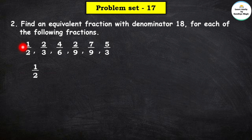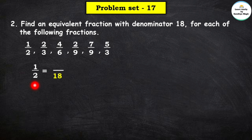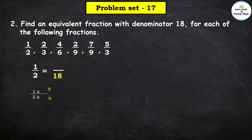The first fraction given is 1 upon 2. We have to find an equivalent fraction of 1 upon 2 whose denominator is 18. In the 2 times table, 2 multiplied by 9 gives 18. So we multiply both numerator 1 and denominator 2 by 9: 1 × 9 = 9 and 2 × 9 = 18. So the equivalent fraction of 1 upon 2 is 9 upon 18.